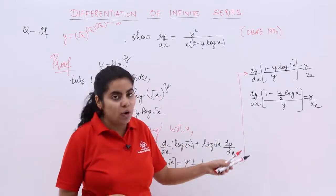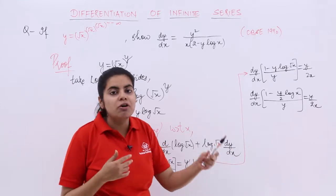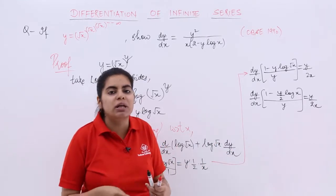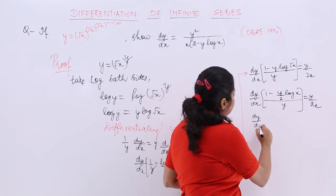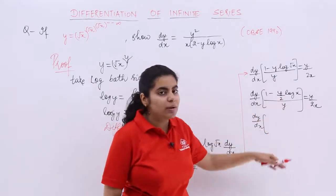Still we are doing it just to verify with few students who are not able to do it in the first go. So now it is dy by dx. Taking the LCM here, 2 minus y log x divided by 2 equals y upon 2x.